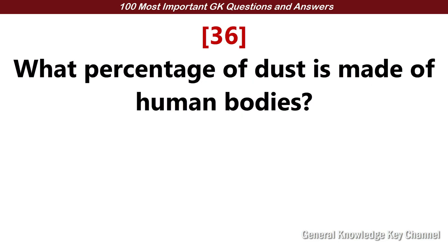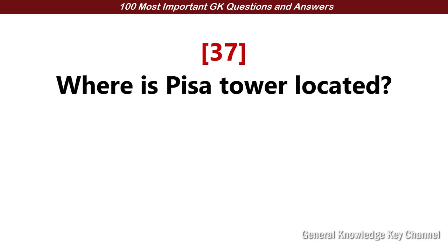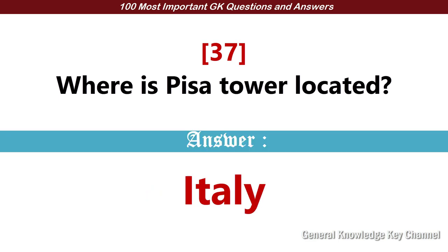What percentage of dust is made of human bodies? Answer: 70%. Where is the Pizza Tower located? Answer: Italy.